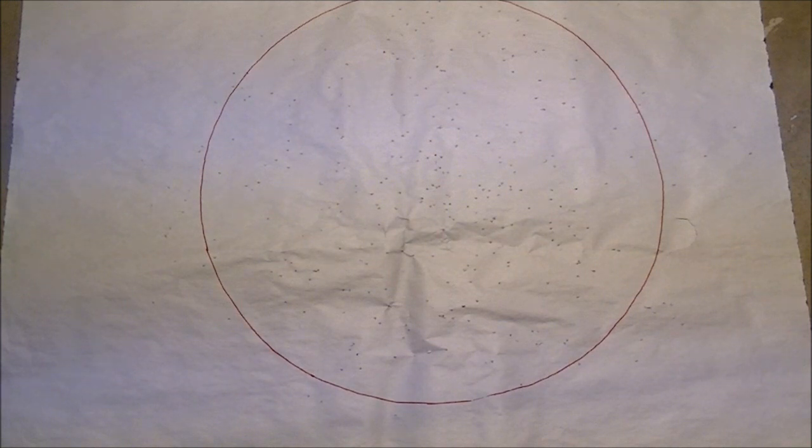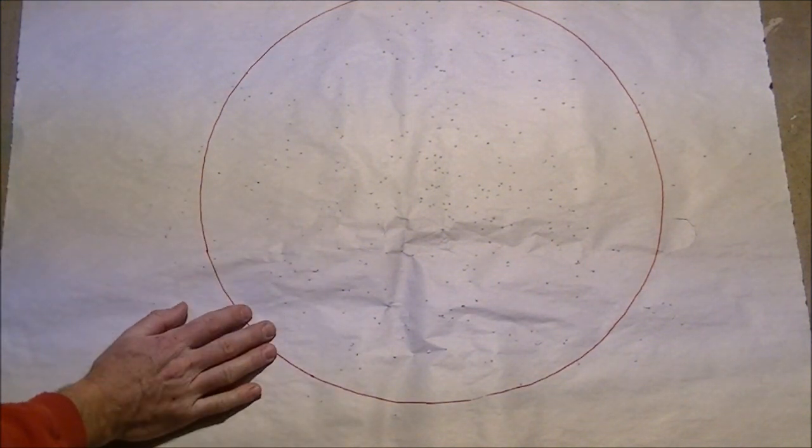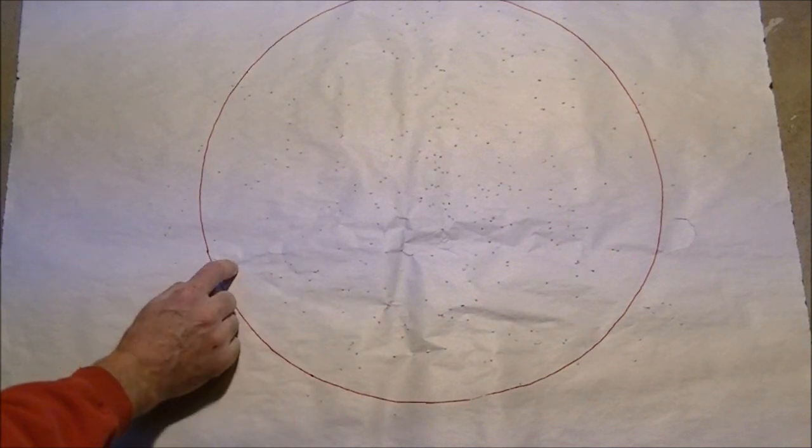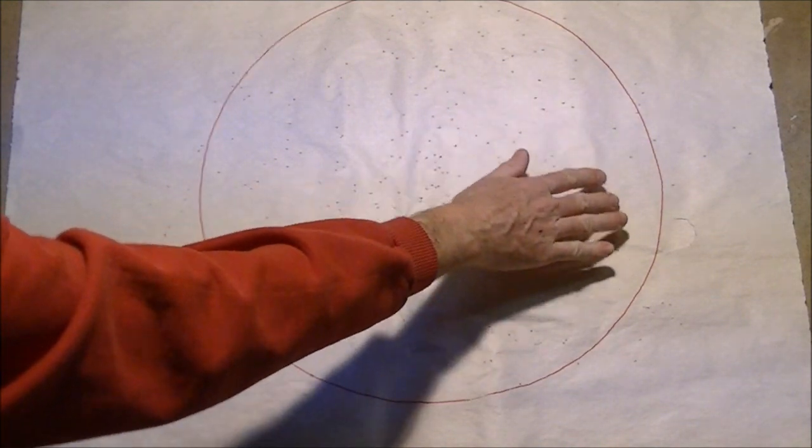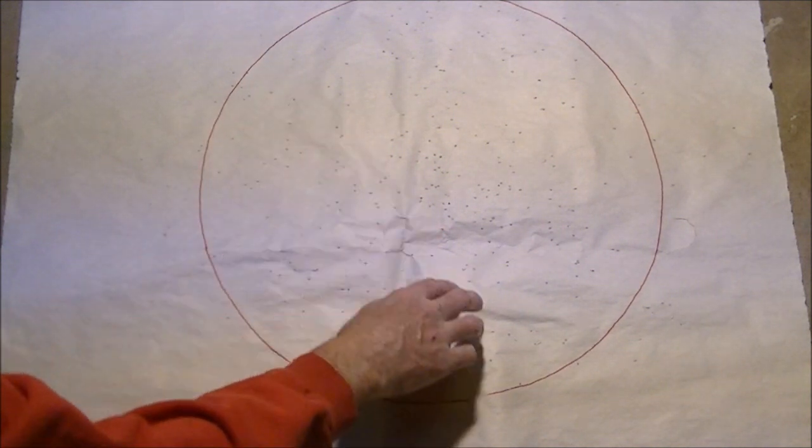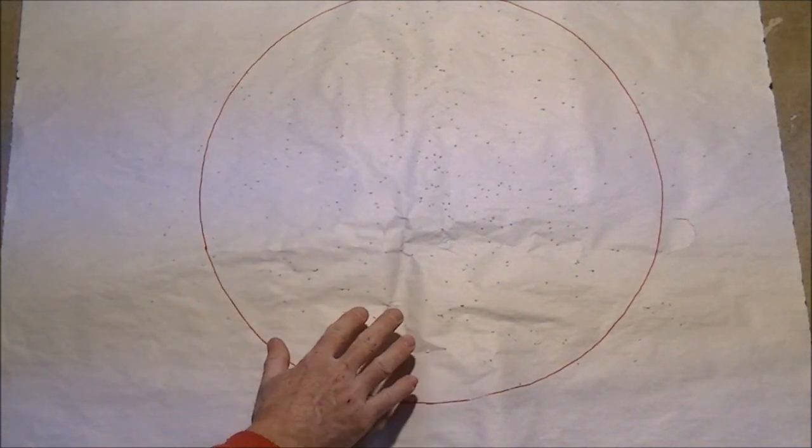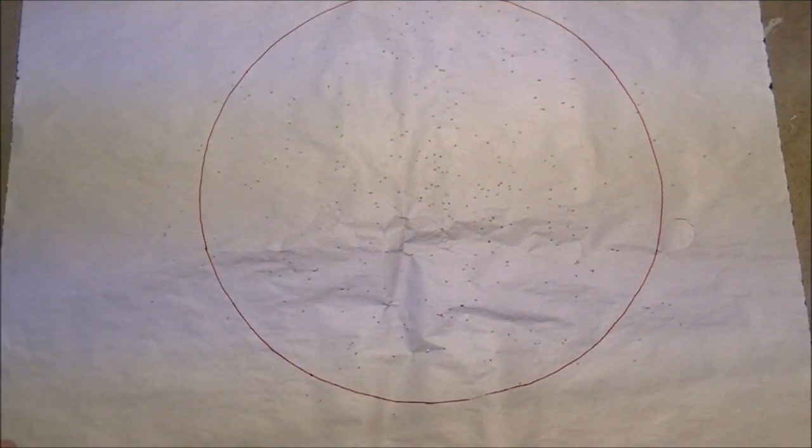Moving on up to the modified choke, we've got 49 pellets outside of the 18 inch circle. We've got kind of a better pattern yet than the improved cylinder and the cylinder. There are very few sparse sections in this pattern, good even distribution of hits. Just a little bit of thinness on the right hand side, but basically pretty well filled out pattern for a 410. You've got to remember this is only a half ounce of shot, so there's not a lot of pellets to work with.